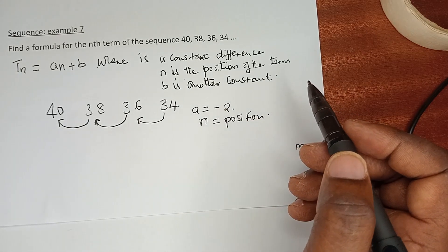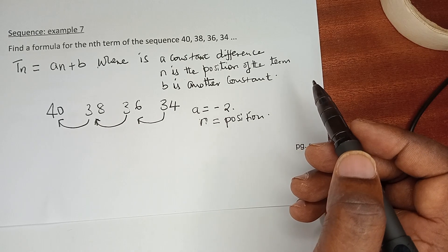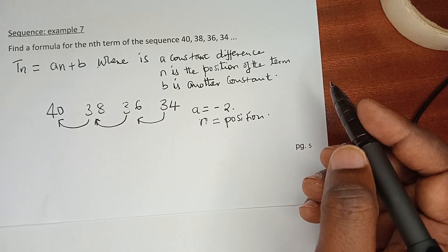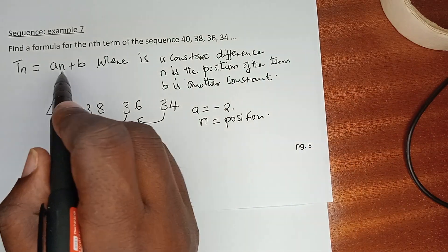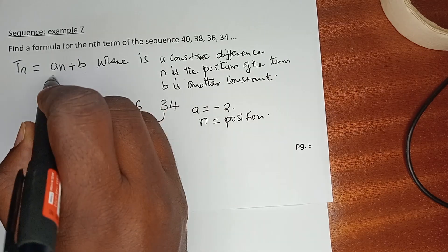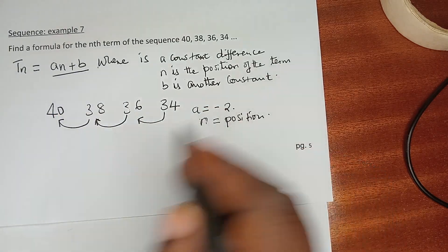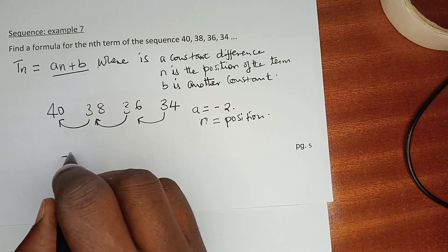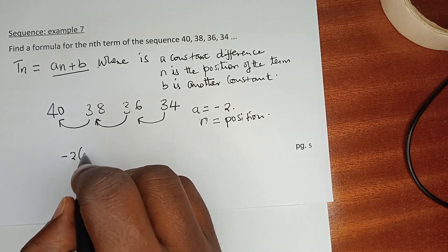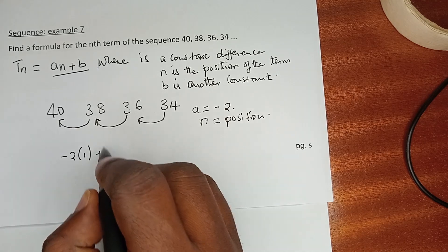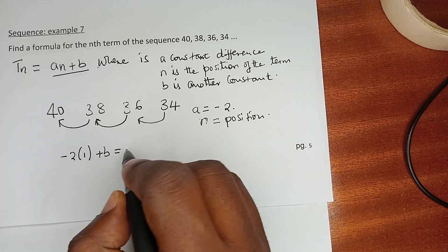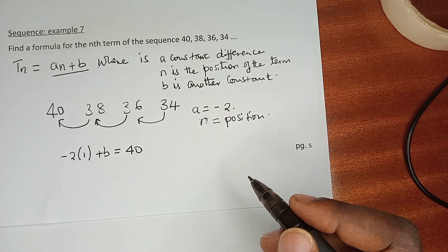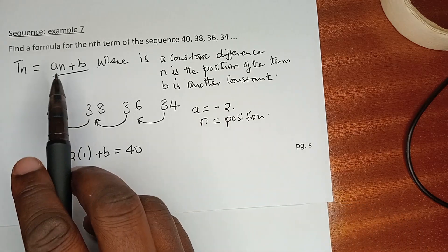What about b? b is another constant that has to be found through evaluation. So let's go. The formula is a*n + b, and our a is -2. If we use 40, then we are going to say -2 times n, which is 1, plus b is equal to